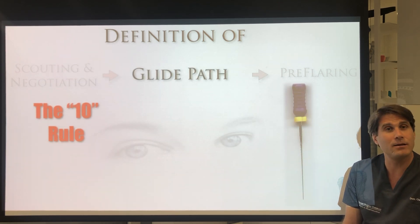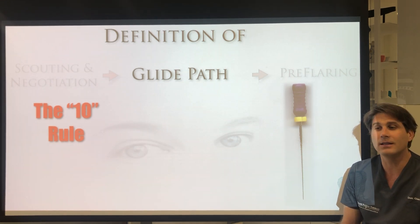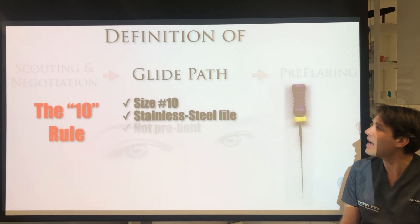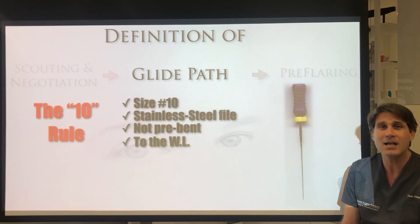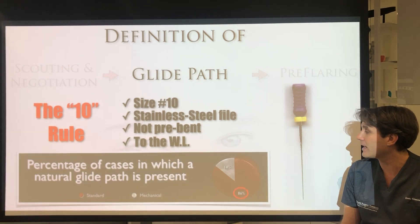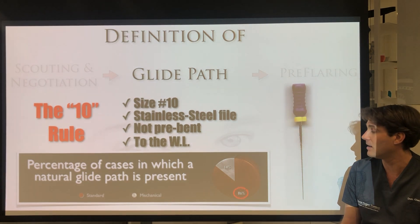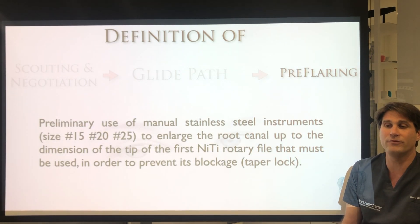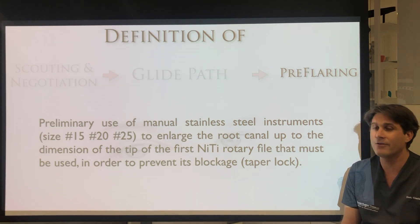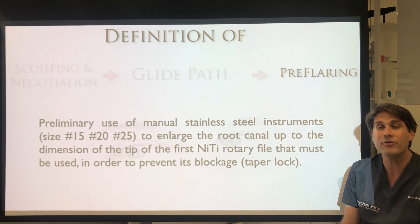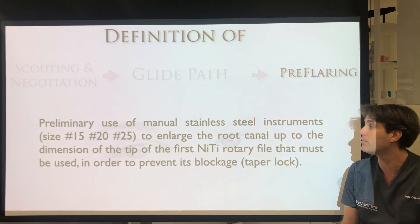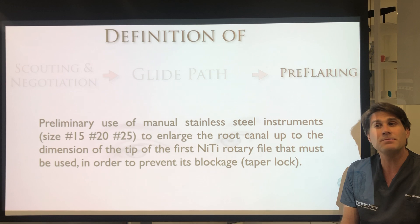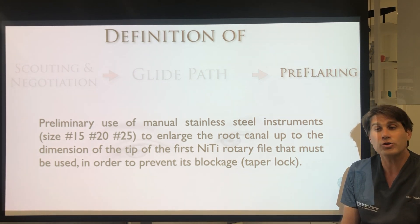The GlidePath, as defined by John West, can follow what I have called the '10 rule.' That means a GlidePath is established when a size 10, stainless steel, not pre-bent file can arrive to the working length in a predictable, repeatable, and effortless way. More than 85% of root canals already have a GlidePath with this characteristic. Pre-flaring, instead, is defined as a preliminary use of manual stainless steel instruments — usually sizes 15, 20, 25 — to enlarge the root canal up to the dimension of the tip of the first nickel-titanium rotary file to be used, in order to prevent its blockage and taper lock. Pre-flaring was introduced to reduce fracture by torsion of a rotary file by reducing the taper lock of the tip of these instruments.